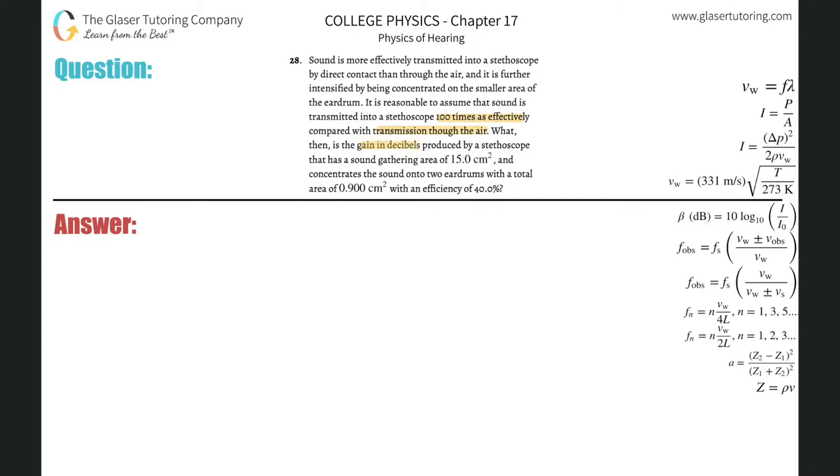What then is the gain in decibels produced by a stethoscope that has a sound gathering area of 15 cm² and concentrates the sound onto two eardrums with a total area of 0.9 cm² with an efficiency of 40%?